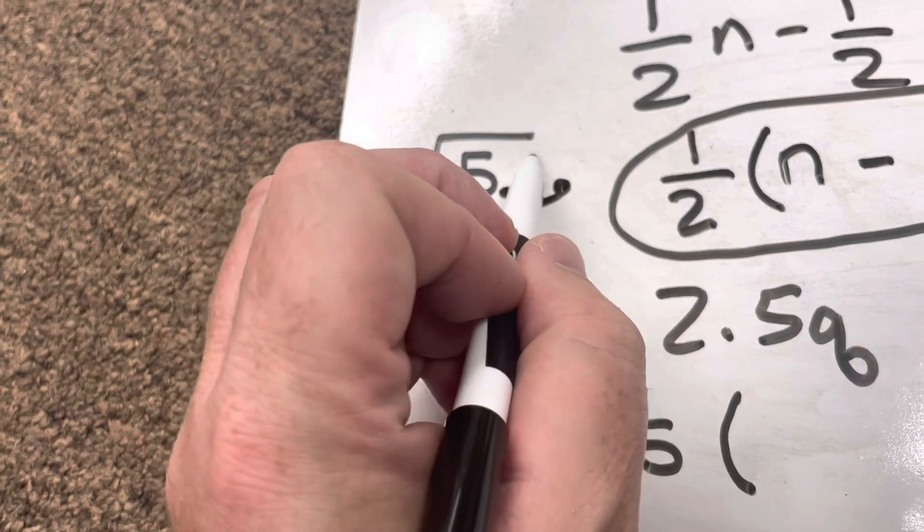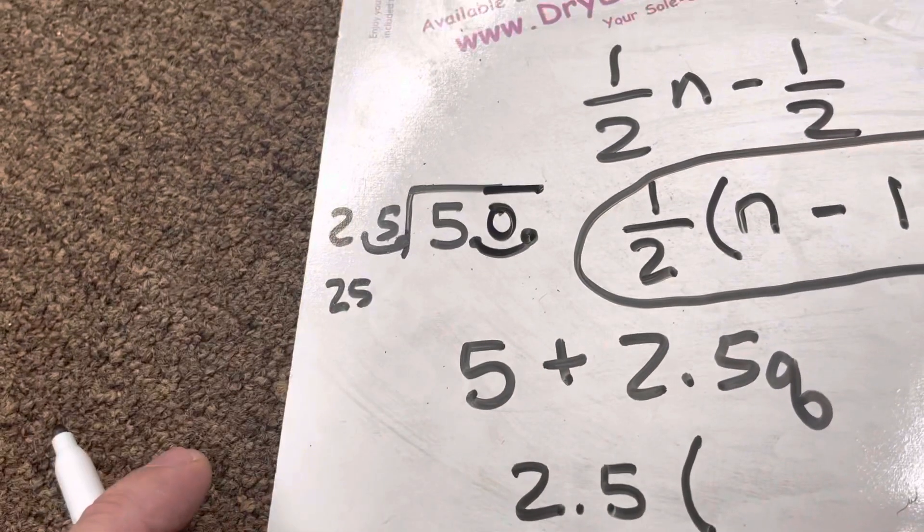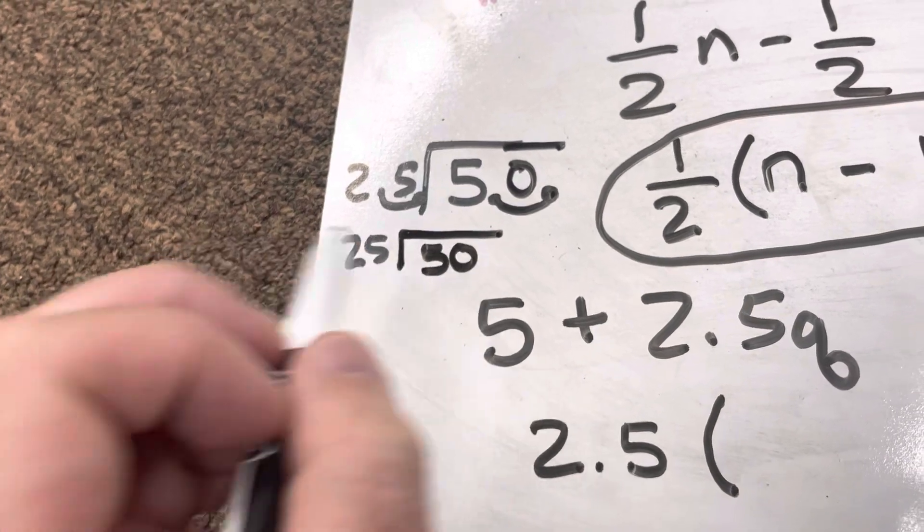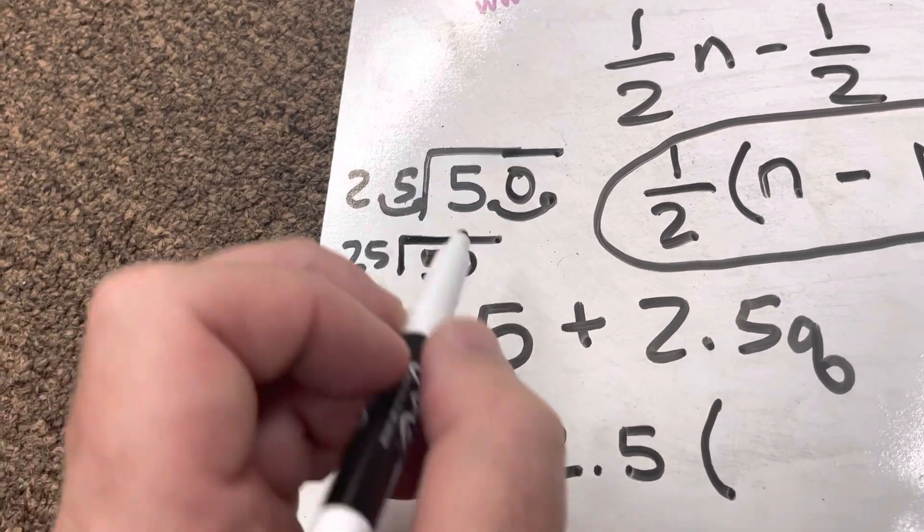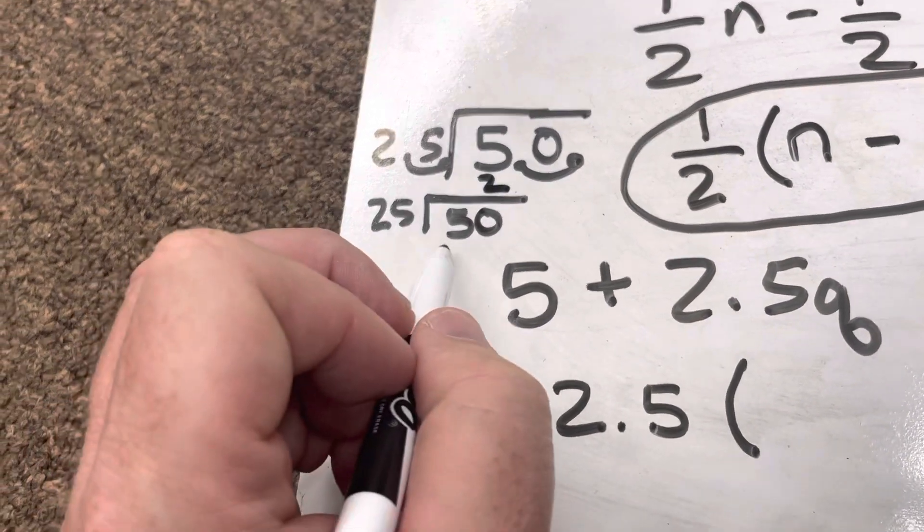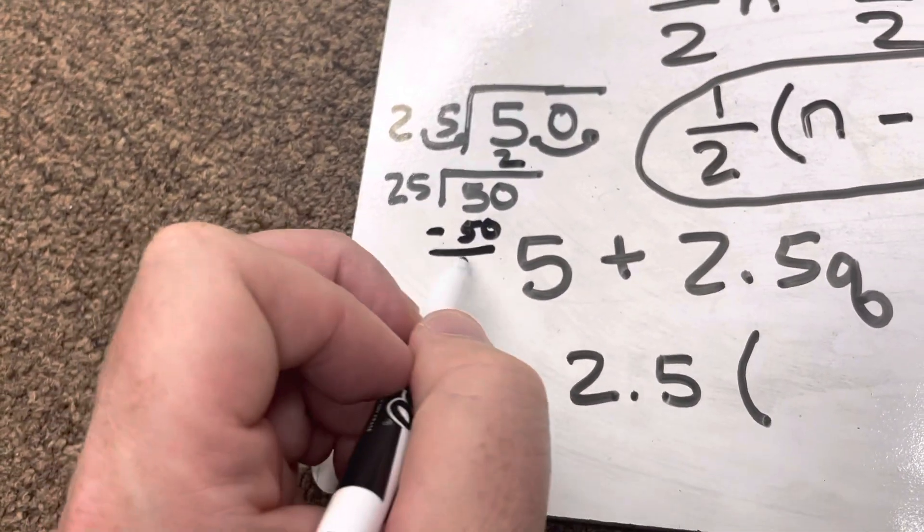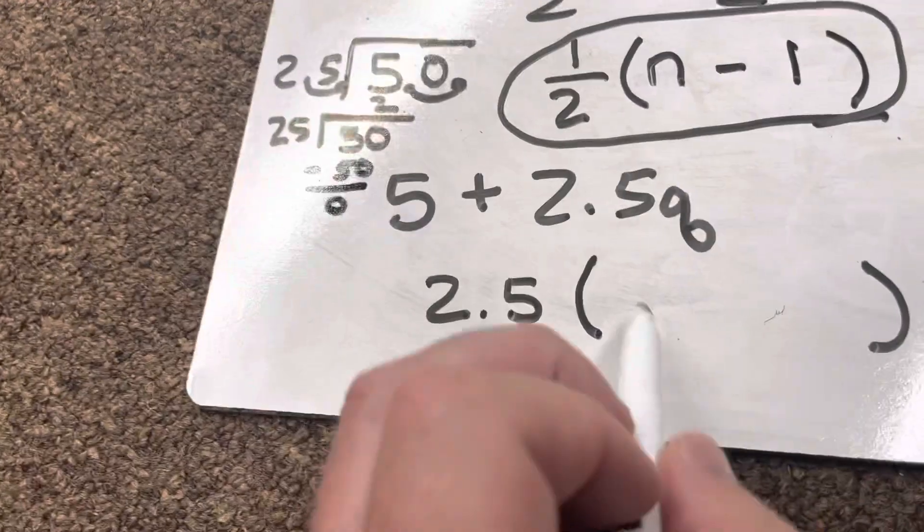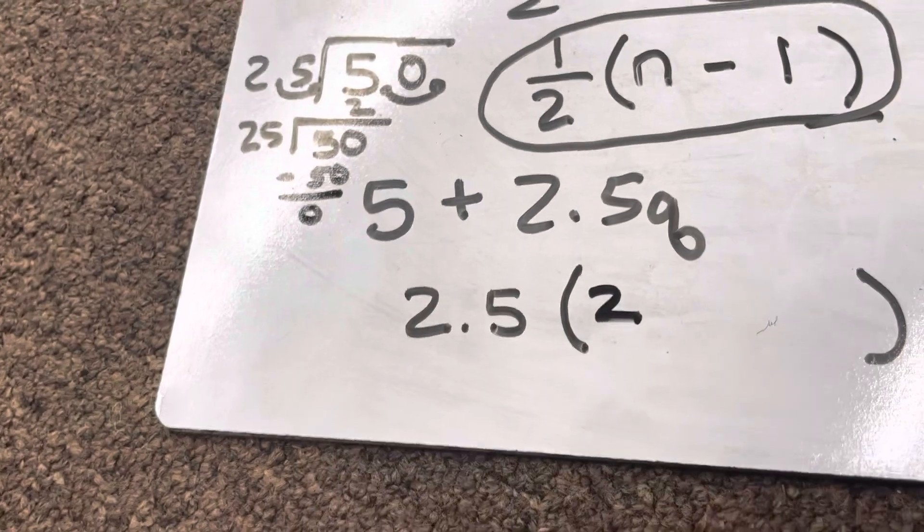I'm now doing 50 divided by 25. I know that 25 can go into 50 two times, and that 2 times 25 is 50, leaving us with none left over. So 5 divided by 2.5 is 2.